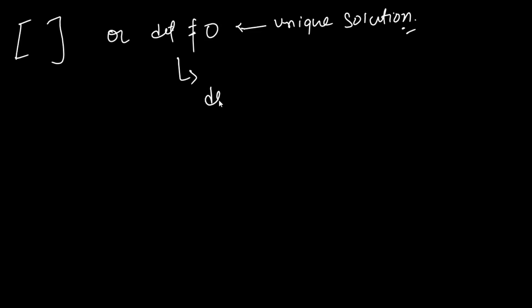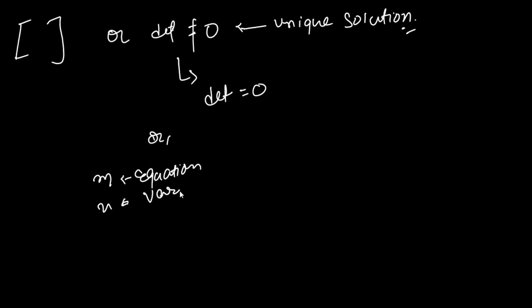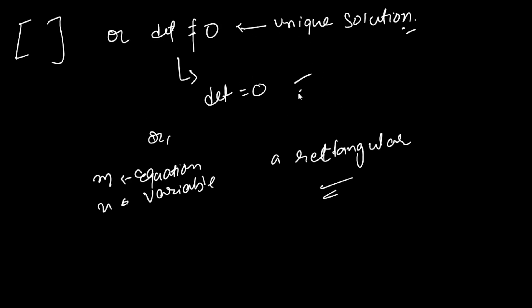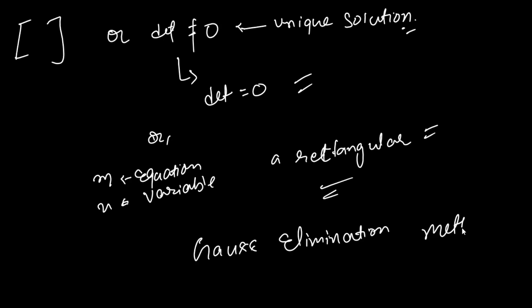Now the question is: how will we solve those cases in which the determinant equals zero, or we have a system of linear equations with m equations and n variables, meaning we have a rectangular coefficient matrix? For solving these two cases — determinant equal to zero and a rectangular matrix — we use a method called Gauss elimination method.